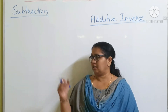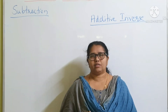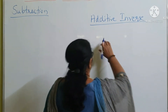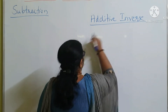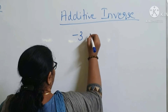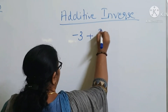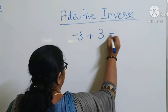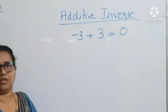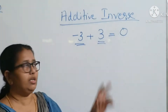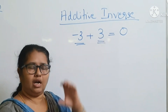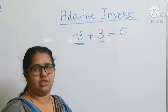Before discussing subtraction, we revise the additive inverse of an integer. Minus 3 plus 3 is equal to 0. Two integers whose sum is 0 are called the additive inverse of each other.